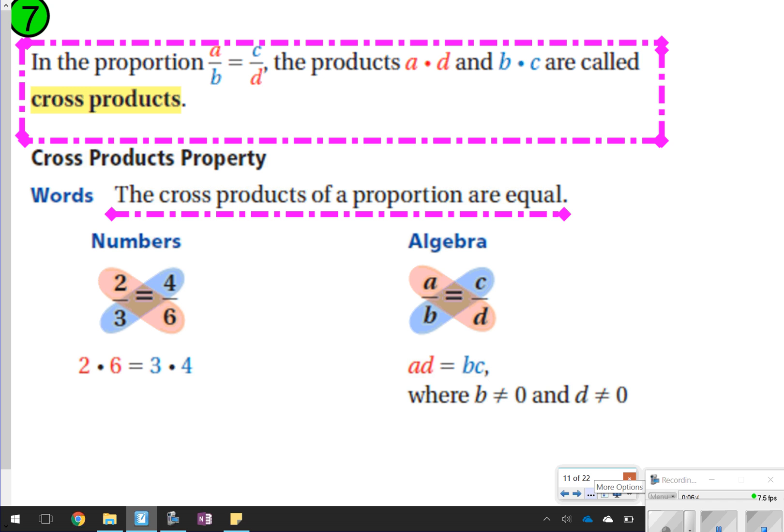The next thing we're going to talk about is the last thing on our notes, and it's called cross products. In the proportion a/b = c/d, the products a times d, cross multiply, and b times c, are called cross products. When the cross products are equal, it's going to be considered a proportion. Let's go ahead and take time now to pause the video and write down the pink box and what's underlined in pink, and then I'm going to show you how to use cross products to figure out if something is proportional or not.